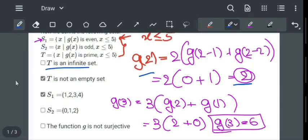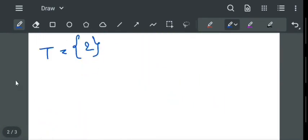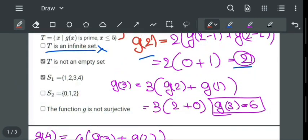Now let us check the option. t is an infinite set, which is absolutely wrong, we can see that t is a singleton set. Second option, t is not an empty set, yes it is correct, t is a singleton set.